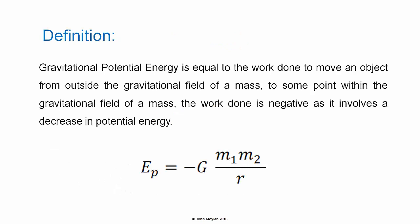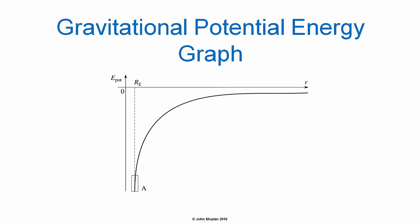So gravitational potential energy is defined as being equal to the work done to move an object from outside the gravitational field of a mass to some point within the gravitational field of a mass. The work done is negative as it involves a decrease in potential energy. Gravitational Potential Energy Graph. Gravitational potential energy plots as an inverse square graph, because the force due to gravity decreases with the inverse square of the distance from the center of mass.